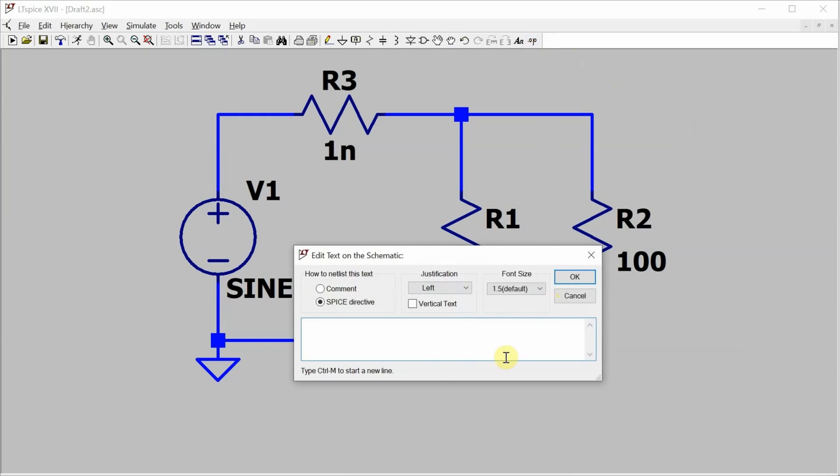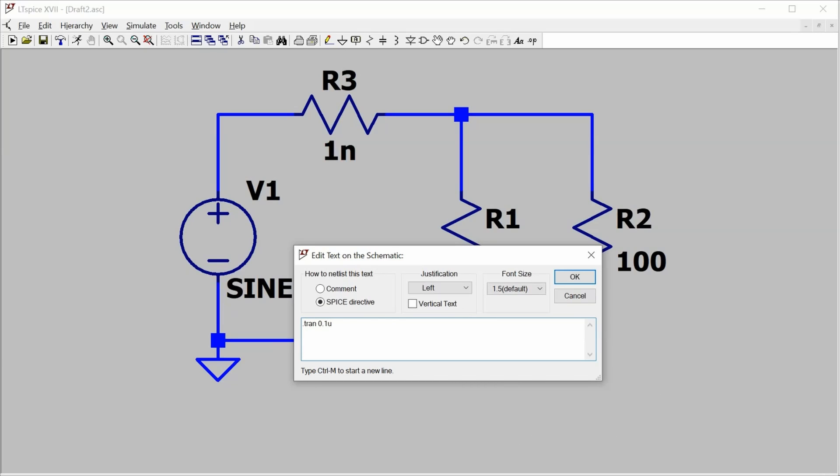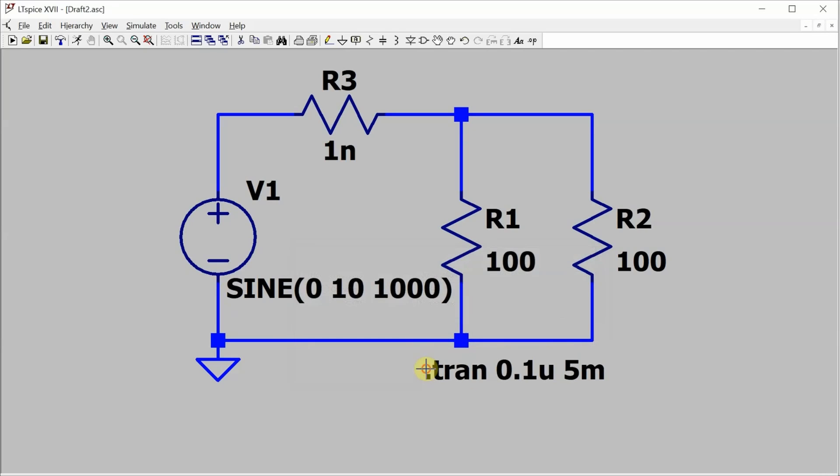And I need the simulation directive. I'm going to look at the transient response. If I can look at the signals over a brief period of time, I'm going to have a step size of 0.1 microfarad. So I've got like 10,000 points per cycle. And let's do it for five cycles. So that's going to be five milliseconds. That's one millisecond per cycle for a one kilohertz signal. Drop that there.